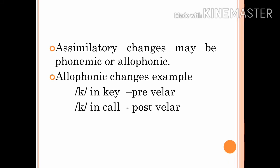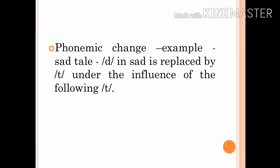The assimilatory changes that take place may be phonemic or allophonic. In other words, the replacing sound and the sound it replaces may be allophones of the same phoneme, or the two sounds may belong to two different phonemes. Example for allophonic change: the phoneme /k/ in 'call' is post-velar under the influence of the following back vowel /o/.